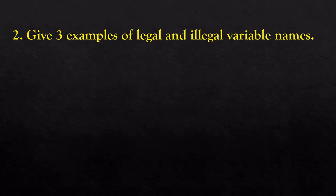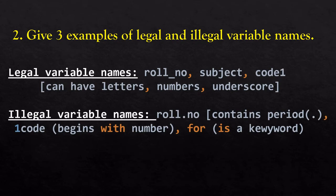Question two: give three examples of legal and illegal variable names. Legal variable names can consist of any letters but should not include any special character except underscore. They can include numbers but should not begin with numbers. Legal examples are: role_number, subject, or code1 — anything with only letters or letters with numbers where the number is not at the first place.